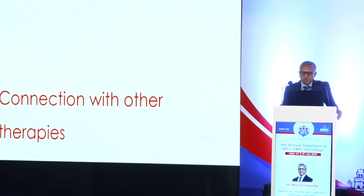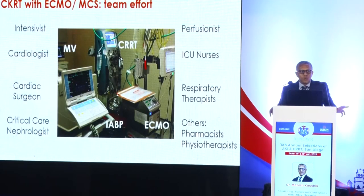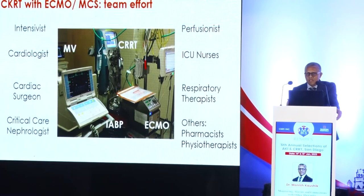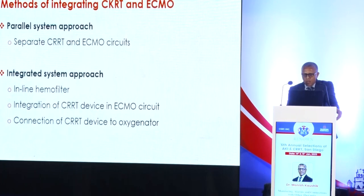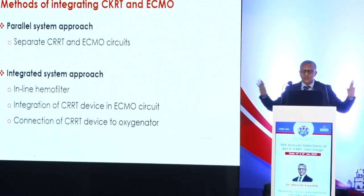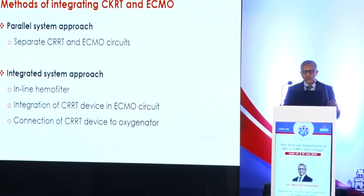In the last few minutes, we will discuss connection with other therapies. The most common scenario is in medical or cardiothoracic units where patients are on extracorporeal membrane oxygenation (ECMO) and require CKRT, sometimes also to manage fluid balance — which is associated with poor outcomes in this group. There are two major ways of connecting: a parallel system approach where both therapies run separately, and an integrated approach where the CKRT circuit is integrated into the ECMO circuit.